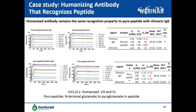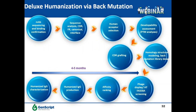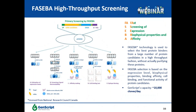Another humanization strategy guarantees that affinity won't be lost during the process. After sequence analysis and CDR grafting, we perform homology structural modeling to identify back-mutation residues, and use high-throughput screening to identify affinity-guaranteed antibodies. We licensed the patented FASEBA platform for high-throughput screening of humanized leads. FASEBA stands for Fast Screening of Expression, Biophysical properties, and Affinity — it selects the best protein binders from a large number of candidates in a high-throughput fashion without actually purifying these proteins.